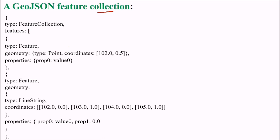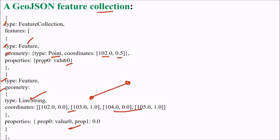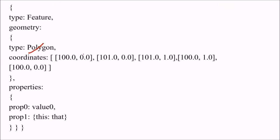A GeoJSON feature collection looks like this: you have a type of feature collection, and within features, each entry has a type of feature. For example, a geometry of type point with coordinates and some properties. Another feature might have a geometry of type line string, with start and end point coordinates and properties. You can also have a polygon, defined by the points of an enclosed surface, with certain properties.